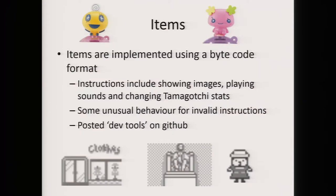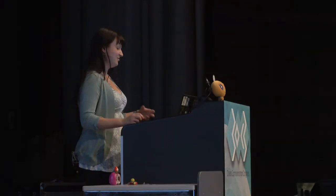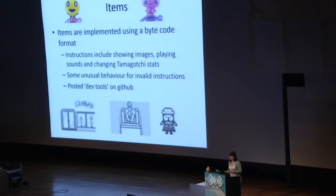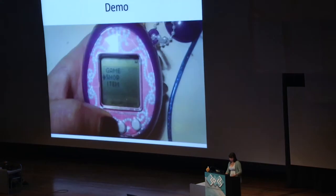At this point I could play more with the functionality. One thing I played with was items — the Tamagotchi supports lots of different types of items. You can buy a dress your Tamagotchi wears, or take your Tamagotchi on a trip to see the Statue of Abraham Lincoln in Washington DC. I found out it was in a bytecode format — you could display an image on screen, play a sound, and change stats. When your Tamagotchi sees Abraham Lincoln, it gets really, really happy. But there was nothing useful for dumping code. Thankfully I could do some fun things, like make a music video or make my Tamagotchi do the Harlem Shake.